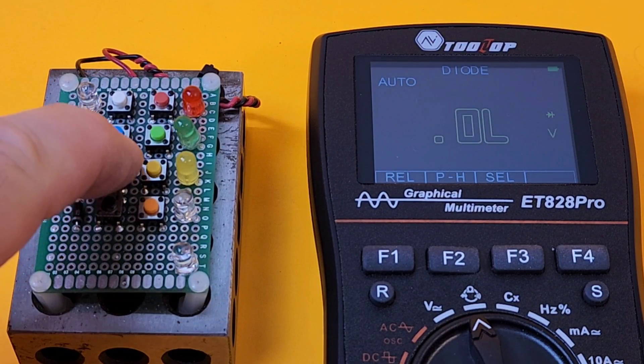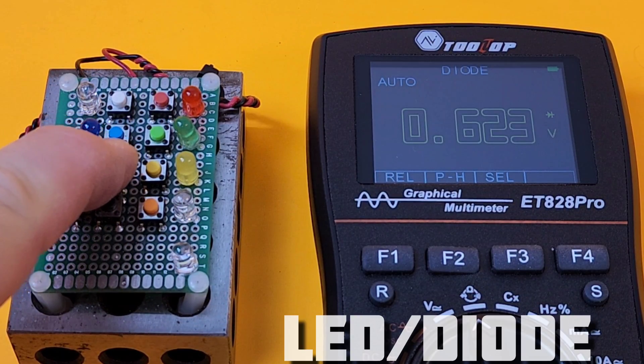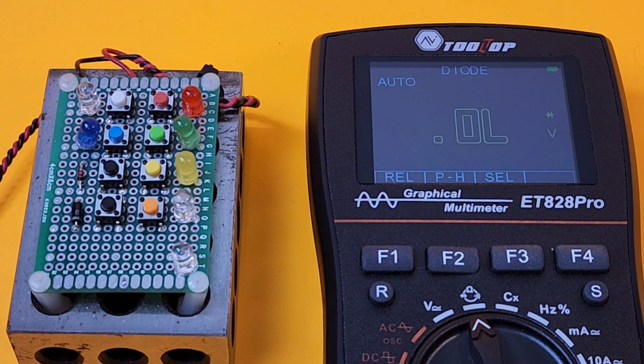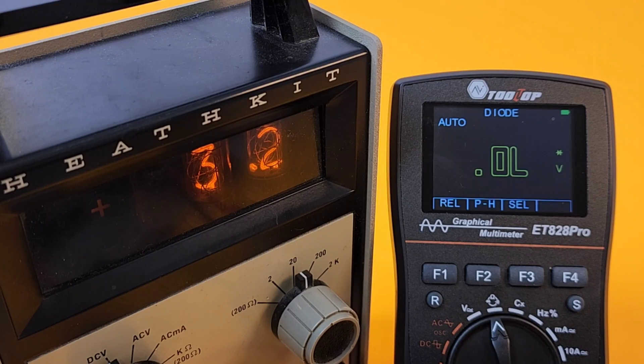And no worries when it comes to standard diodes. It reads those just fine. However, we do not get that nice audible short. Output voltage in diode mode, a very balmy 3.2 volts.